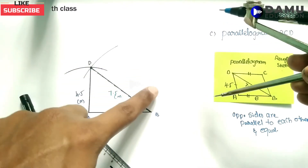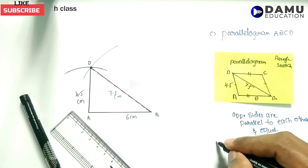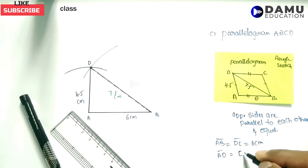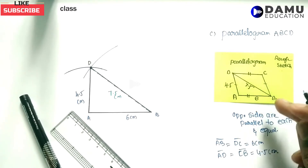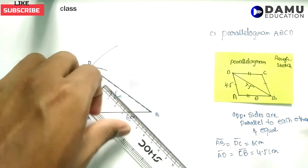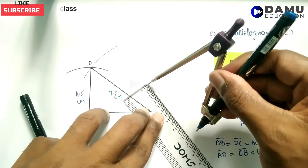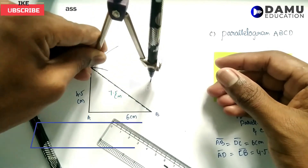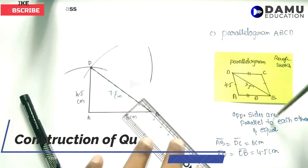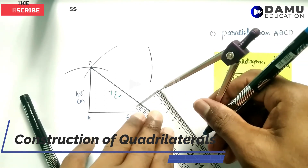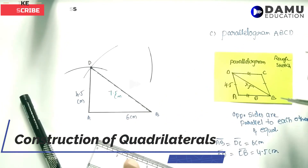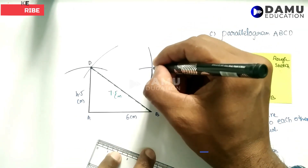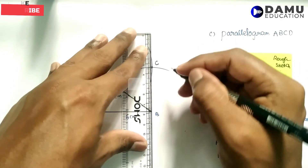We know that DC equals AB equals 6 centimeters, and AD equals CB equals 4.5 centimeters. To locate point C, from D as center draw an arc with radius 6 centimeters. Then from B as center draw an arc with radius 4.5 centimeters. The point where the two arcs coincide is point C.